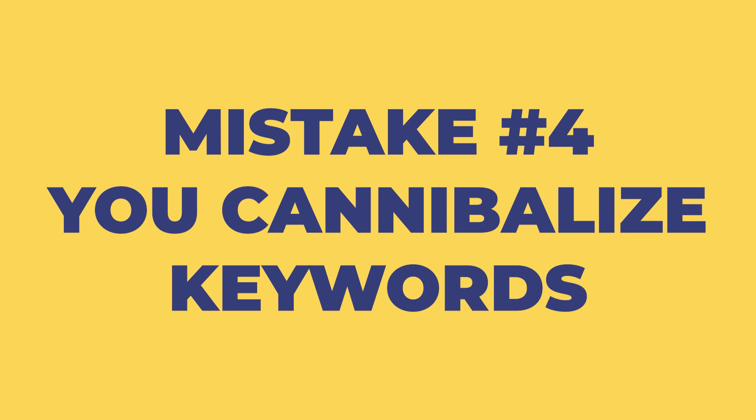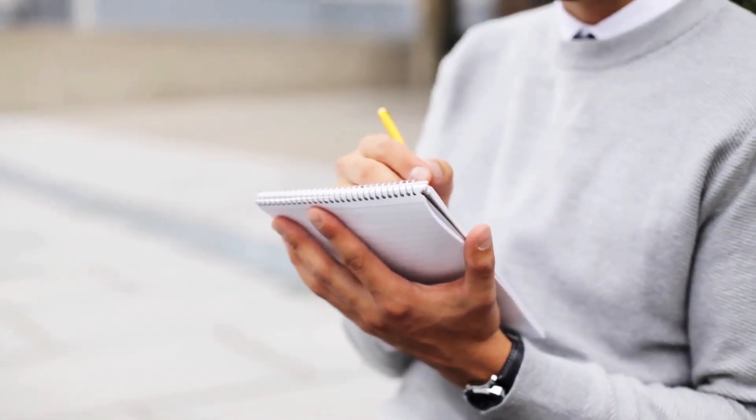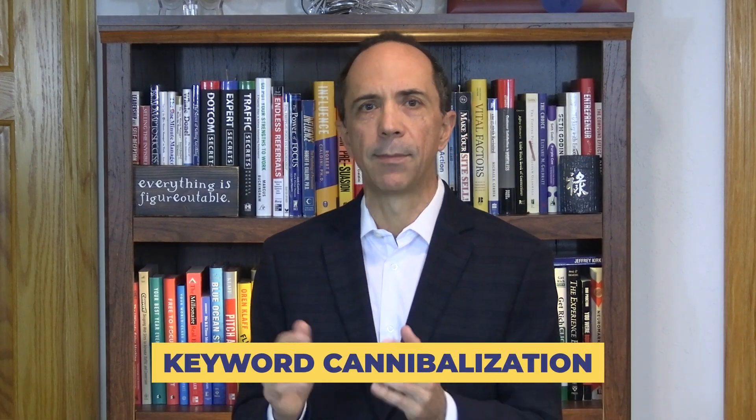Mistake number four: you cannibalize your keywords. When you write articles and want them to appear higher in Google search results, you need to be careful not to use too many similar words. If you do, it's called keyword cannibalization. Especially when your site is growing and you're adding more content, there is a big chance that you use similar keyword phrases or even focus keywords. While you think this will help your site appear in the search results more, it can actually do the opposite.